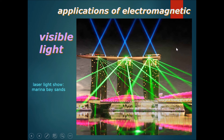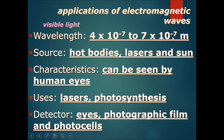The fourth type is visible light — common sense to most people. Shown here is a laser light show from Marina Bay Sands in Singapore. Any light you can see, including lasers, are examples of visible light. The wavelength is a very narrow window, from 4 times 10 to the power of minus 7 to 7 times 10 to the power of minus 7 meters. Sources include hot bodies, lasers, and the sun. Visible light can be seen by human eyes, and is also used for photosynthesis — the basis of how plants survive. Detectors include our eyes, photographic film, and photo cells.